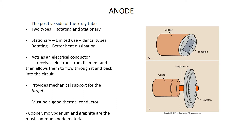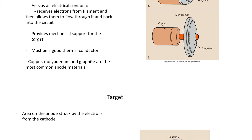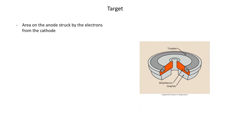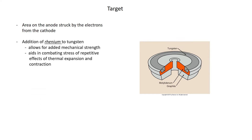As for the anode disc itself, copper, molybdenum, and graphite are the most common anode materials. Looking at the cross-section of the anode disc, we can see the graphite and the molybdenum. On the front of the anode disc is the target material where the x-rays are actually created — and that is tungsten. Rhenium is added to the tungsten, providing added mechanical strength and aiding in combating the stress of repetitive thermal expansion and contraction of the disc.